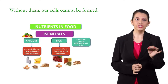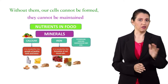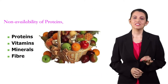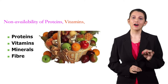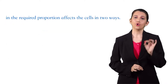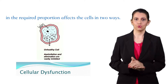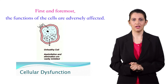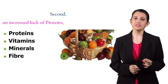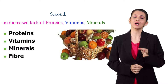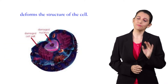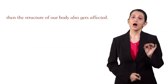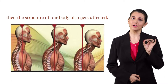Without them, our cells cannot be formed, they cannot be maintained, and they cannot perform their functions properly. Non-availability of proteins, vitamins, minerals and fiber in the required proportion affects the cells in two ways. First and foremost, the functions of the cells are adversely affected. Second, an increased lack of proteins, vitamins, minerals and fiber deforms the structure of the cell. If the structure of the cell is affected, then the structure of our body also gets affected.